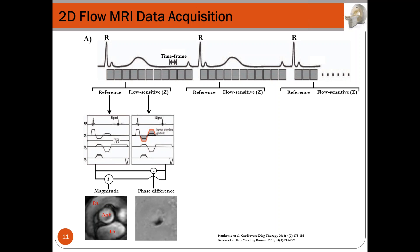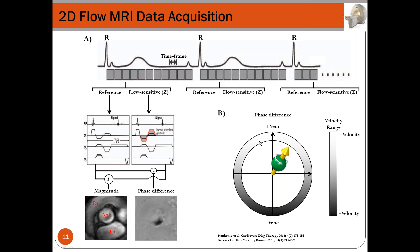The phase difference image has grayscale values. To translate these to velocities, there is a linear relationship between velocity and the velocity encoding limits set during acquisition. Velocity encoding is related to the grayscale levels of the image, and each grayscale level corresponds to a specific velocity. By applying this linear association between grayscale level and velocity, we obtain information on velocities crossing the imaging plane.